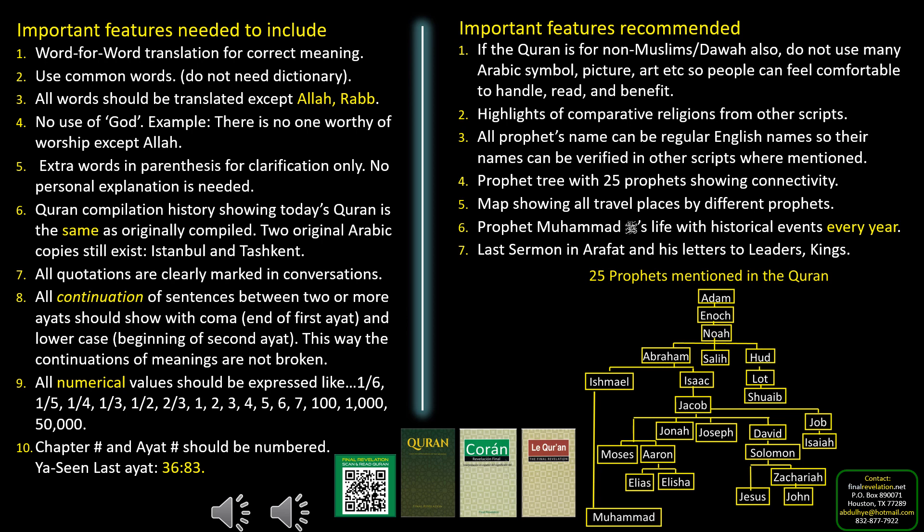His goals and objectives should be clearly marked. His last sermon should be listed. Here you can see there are 25 prophets and how they are connected. It is very useful for non-Muslims to see the connectivity of different prophets, helping them understand the continuation of all religions from Abraham to Moses, Jesus, and Muhammad (SAW).